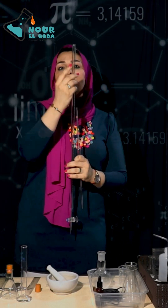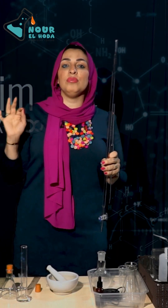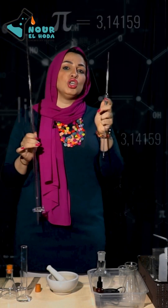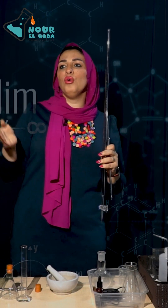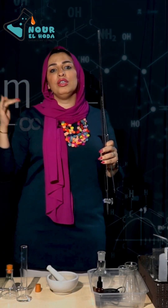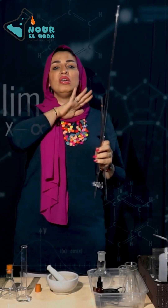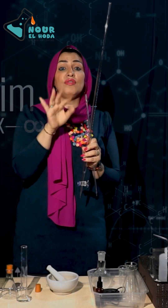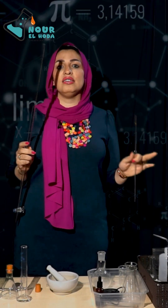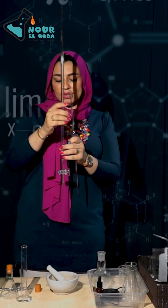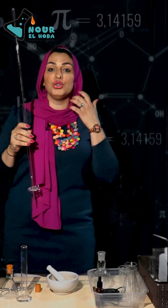The burette reads from 0 at the top to 50 cm³ at the bottom, so it can measure up to 50 cm³. The pipette can only measure 25 cm³. If I want to measure, say, 24.4 cm³ I cannot use a pipette. With the burette I can measure any volume, even with fractions.